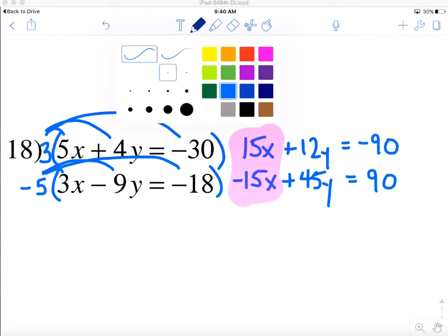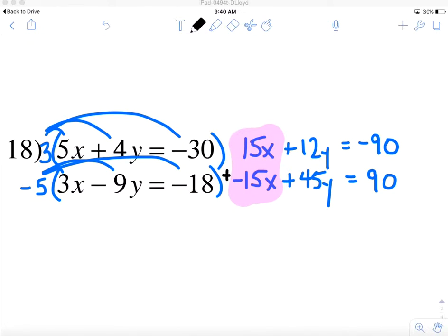So now what I'll do is I'm going to add these together. I'm going to put my plus sign with a little parenthesis. I'm trying to squeeze it in. And the 15x and the negative 15x essentially create 0x which we won't need. The 12 and the 45y give me 57y, and the negative 90 and the positive 90 give me 0.